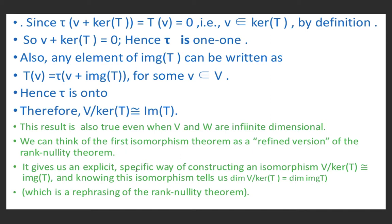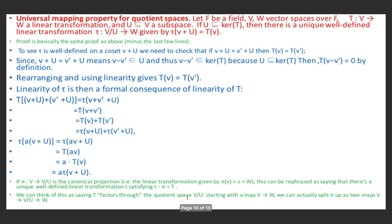We can think of the first isomorphism theorem as a refined version of the rank-nullity theorem studied in an earlier lecture. It gives an explicit way of constructing an isomorphism from V/ker(T) to im(T), and knowing this isomorphism tells us dim(V/ker(T)) = dim(im(T)), which is a rephrasing of the rank-nullity theorem. The key work in the proof is showing we get a well-defined induced map τ from V/ker(T) to im(T), and these arguments generalize to give the universal mapping property of quotient spaces.